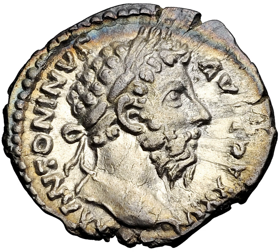Although the denarius remained the backbone of the Roman economy from its introduction in 211 BC until it ceased to be normally minted in the middle of the 3rd century, the purity and weight of the coins slowly but inexorably decreased. The problem of debasement in the Roman economy appears to be pervasive, although the severity of the debasement often paralleled the strength or weakness of the empire. It is believed debasement was caused by several factors, including a lack of precious metals and inadequacies in state finances.